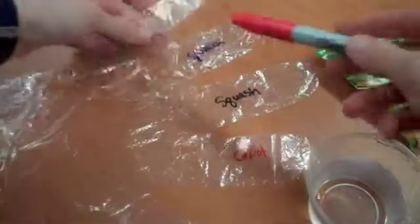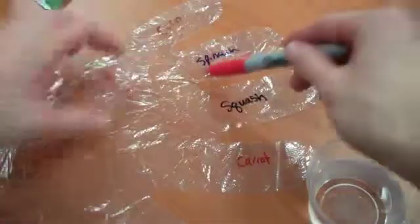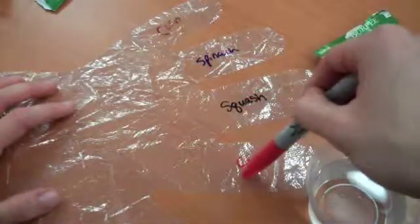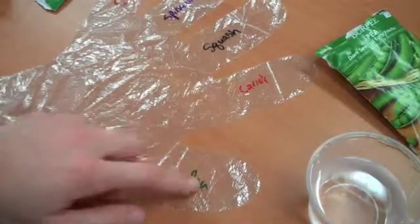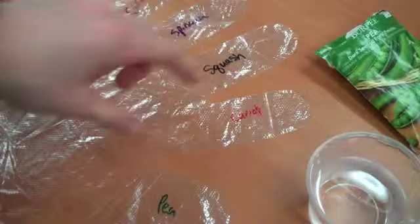First, use the permanent marker to write the names of the seeds on your glove. Little tip, make the short names on the short fingers and the long names on the long fingers.